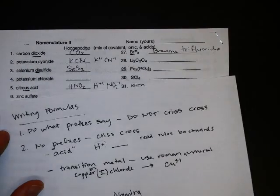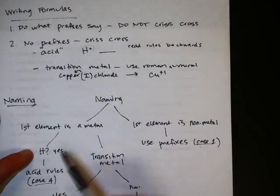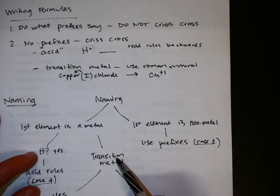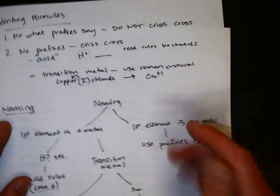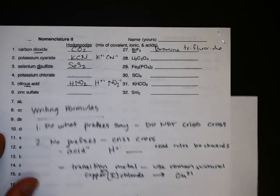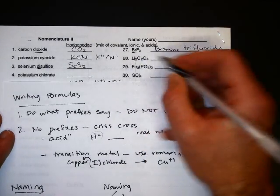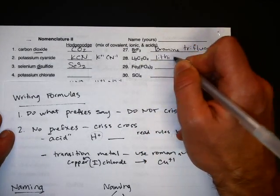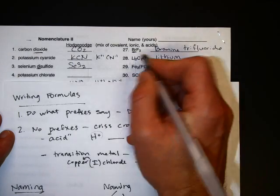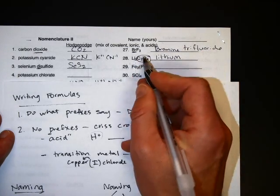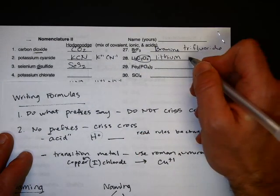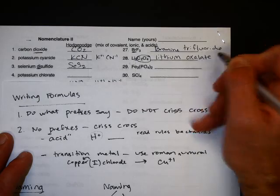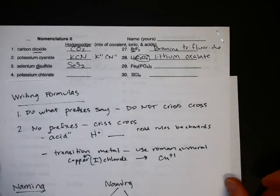Next one is LiC2O4. So first element is a metal. It is not hydrogen. It's not a transition metal. Lithium is in the upper left-hand corner. So I'm going to not use Roman numerals, and treat it as a case two. So I name the first, which is lithium. And then I look up this one, C2O4. C2O4, there's no box for the periodic table. So you look it up, and it's oxalate. And if it's on the back of your polyatomic ion list, then you just give it that name, and that's it.